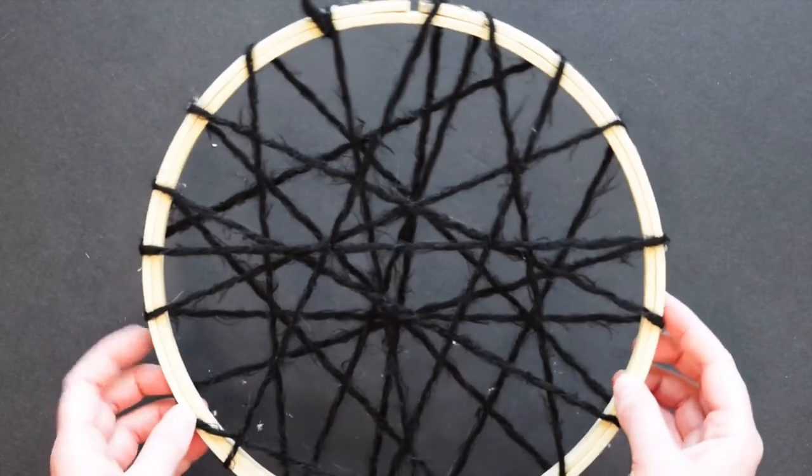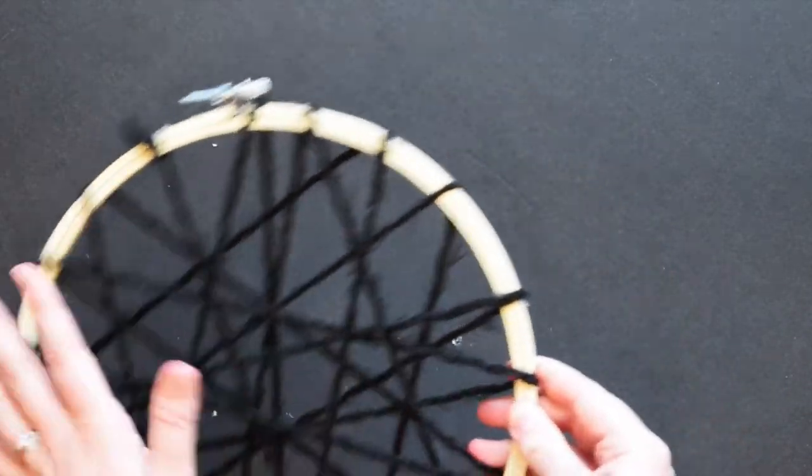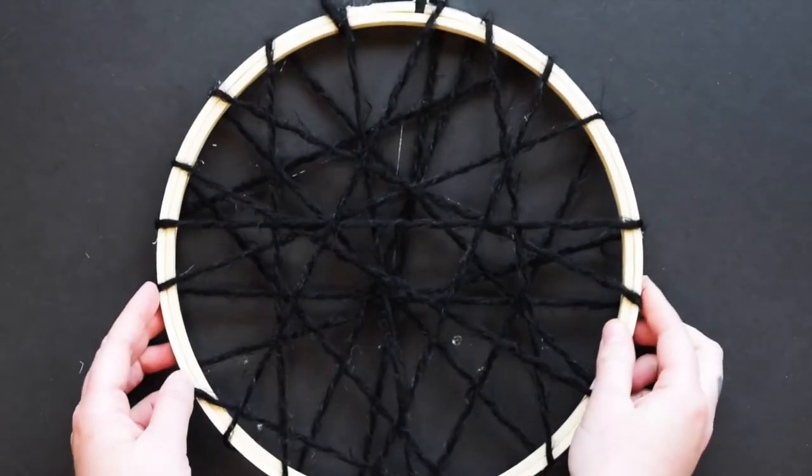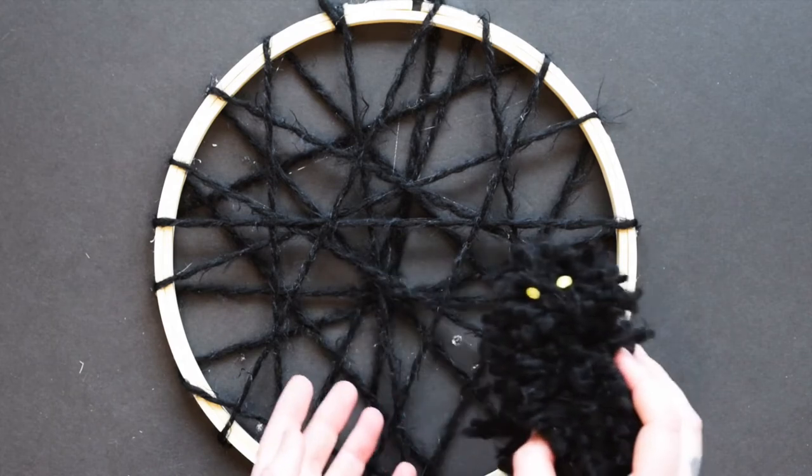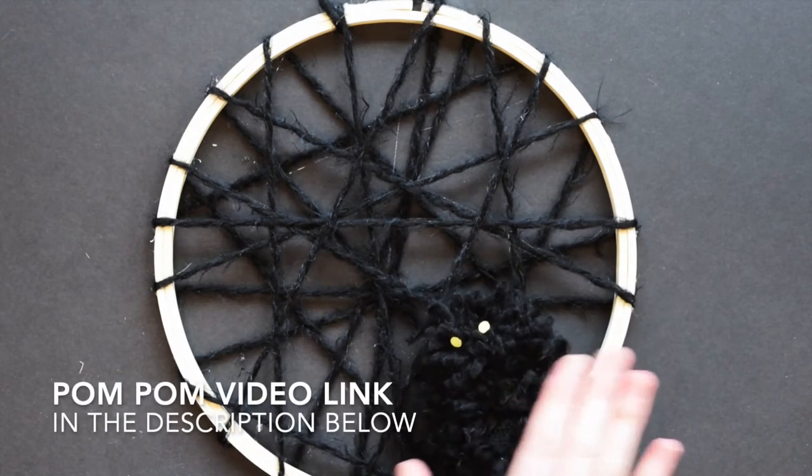Once you're done wrapping your yarn randomly around your hoop to look like a spider web, you can add a little spider, a little pom-pom spider here on the side, to add to the decoration.